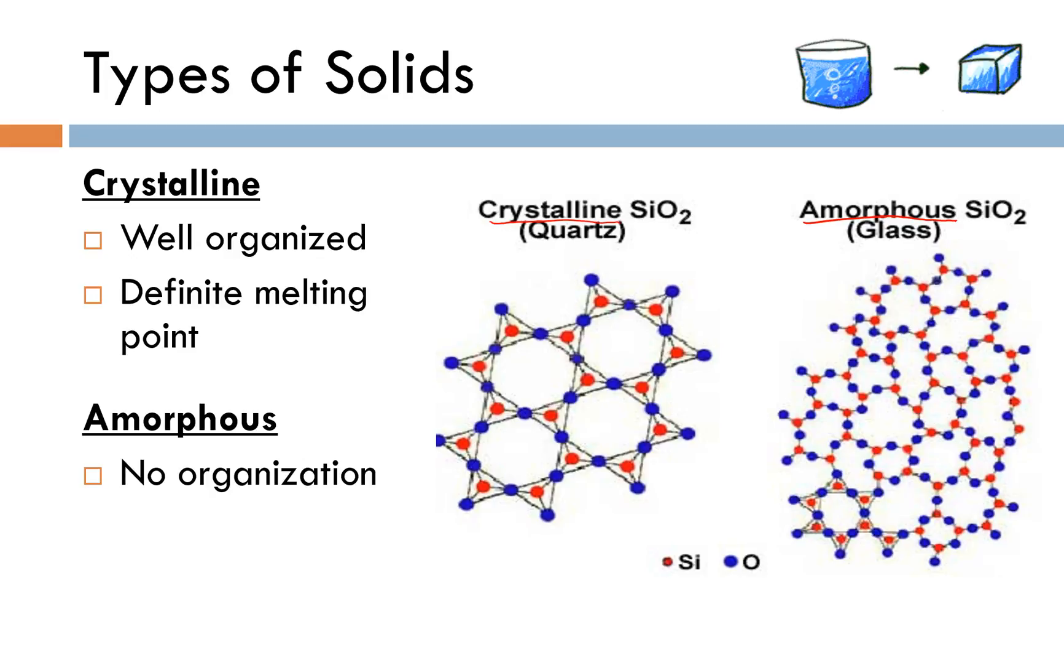The amorphous sample has virtually no organization. It looks pretty random. You might have noticed that both quartz and glass have the same empirical formula, SiO2, but we have two very different properties and different substances. So amorphous has no organization and as a result is going to melt over a range of temperatures.